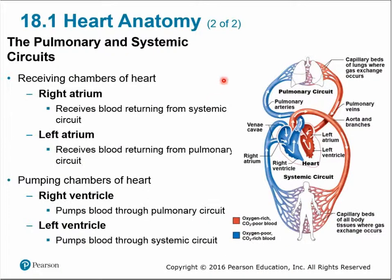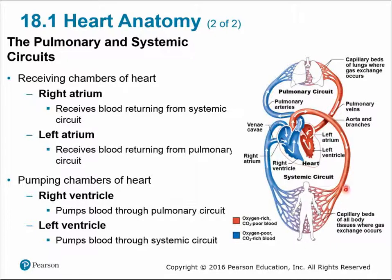There are two receiving chambers of the heart. The right atrium is going to receive blood returning from the systemic circuit — that deoxygenated blood. The left atrium is going to receive oxygenated blood from the pulmonary circuit in the lungs. There are also two pumping chambers: the right ventricle pumps blood through the pulmonary circuit to the lungs, and the left ventricle pumps blood through the systemic circuit to the body and tissues.